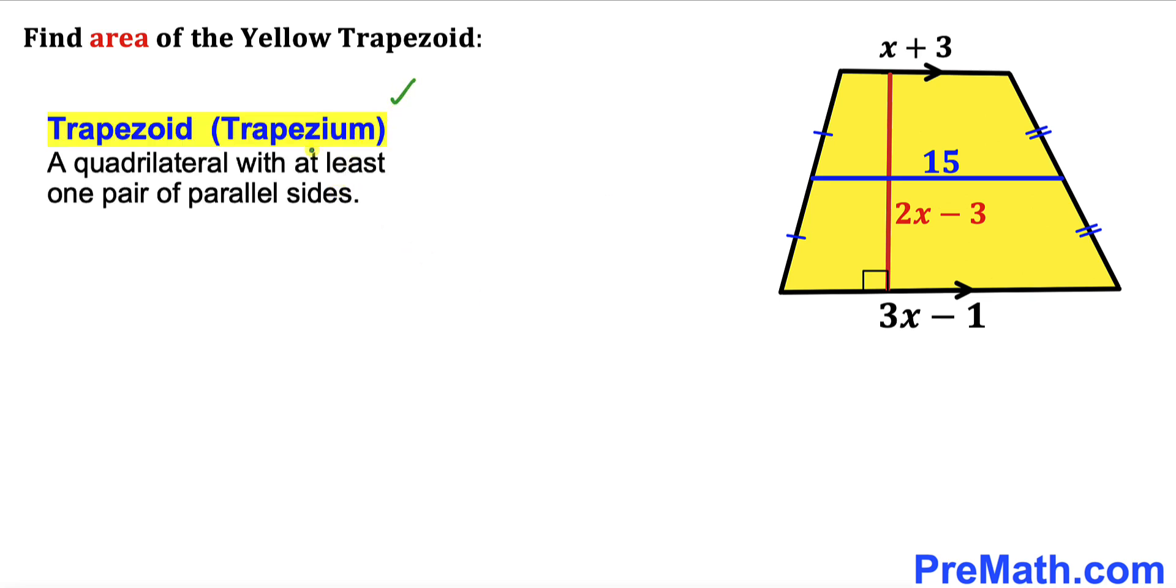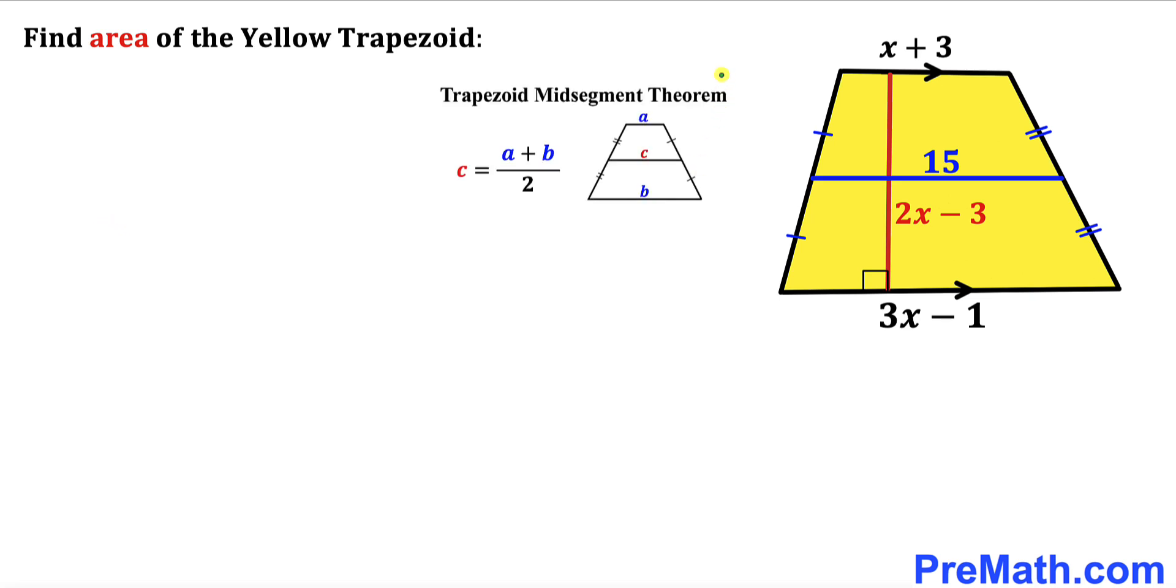Let's go over the definition of the trapezoid or sometimes we call it trapezium. A quadrilateral with at least one pair of parallel sides.